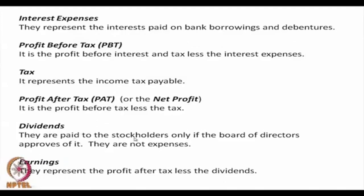Dividends are paid to stockholders only if the board of directors approves, and they are not expenses. Expenses are subtracted from sales to find profit, whereas dividends are subtracted from profits to find earnings — so dividends should not be confused with expenses. Earnings are profit after tax less dividends — the amount ploughed back by the company in its own investment for growth and sustenance of the company's activities.